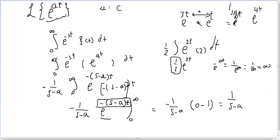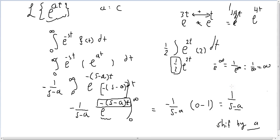So the Laplace transform of e^(at) equals 1 over (s minus a). We call this a shift — specifically a shift by a. Thank you for watching this video, see you in the next one.